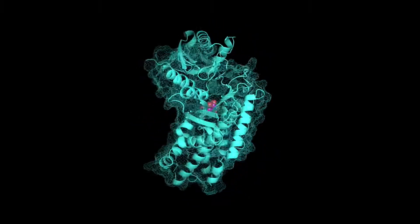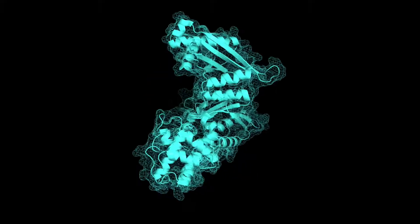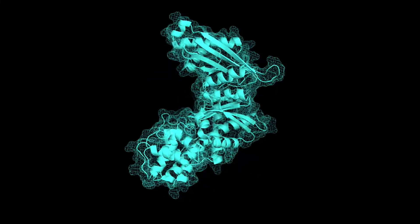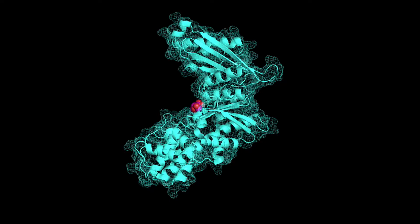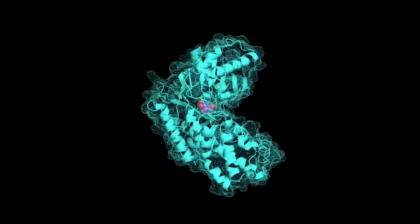This change in conformation is called induced fit. Let's check that out one more time. When unbound, glucokinase is wide open. Glucose binds, and the protein changes shape and closes down around it. So cool.